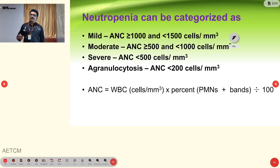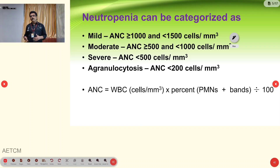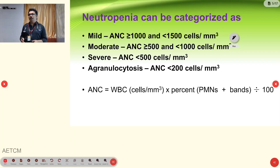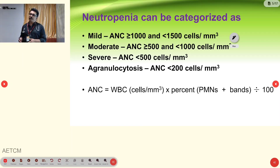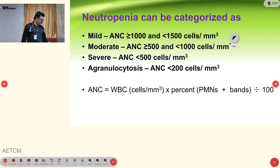Neutropenia is categorized depending on the absolute neutrophil count, which can be calculated from your regular WBC count or by automated machines. Mild is ANC more than 1000 to less than 1500. Moderate is more than 500 to less than 1000. Severe is less than 500. Agranulocytosis is ANC less than 200. These are the classifications of neutropenia according to cell numbers.